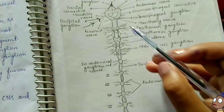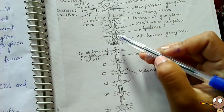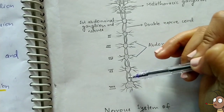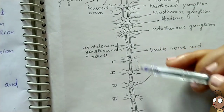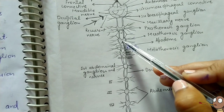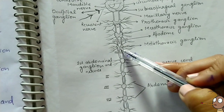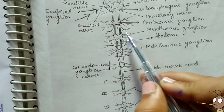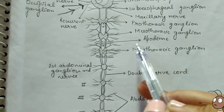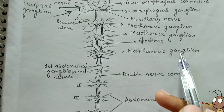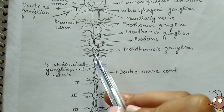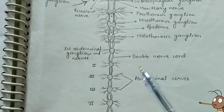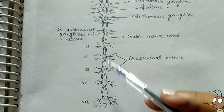Let's count the ganglia: 1, 2, 3, 4, 5, 6, 7, 8, and 9. So there are 9 segmental ganglia. Out of these, 3 are the thoracic ganglia — prothoracic ganglia, mesothoracic ganglia, and metathoracic ganglia. The remaining 6 are the abdominal ganglia.